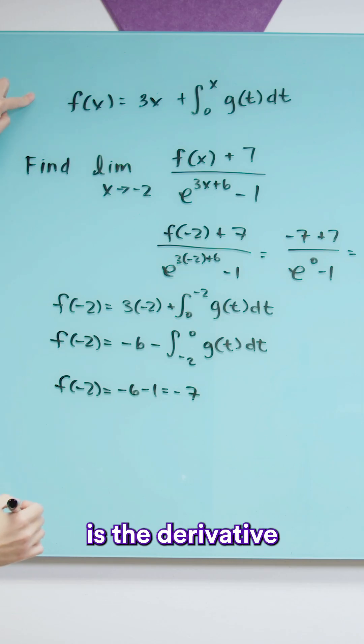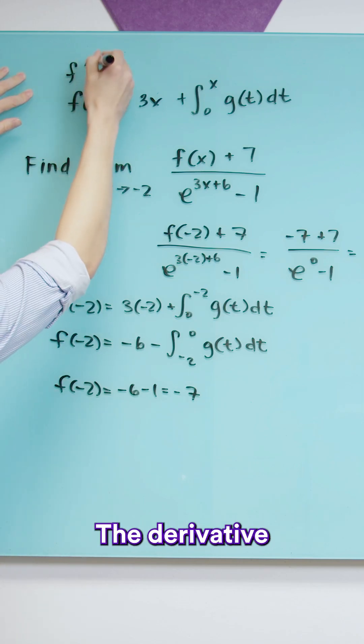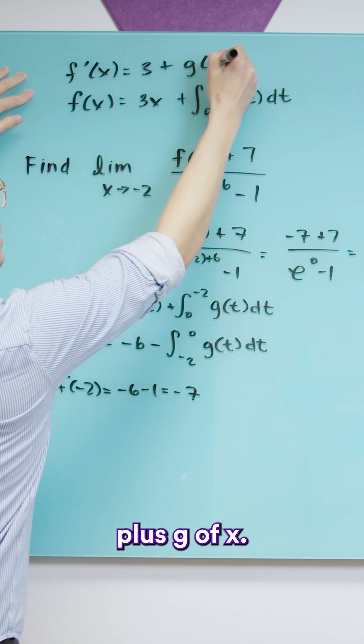Well if this is the function here then what is the derivative going to be? I'm going to put it on top. The derivative of this function is just going to be 3 plus g of x.